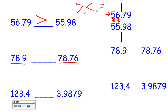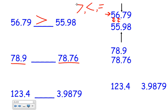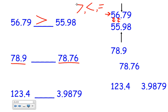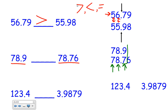On our next example we have seventy-eight and nine-tenths versus seventy-eight and seventy-six hundredths. This is a little bit more challenging because now one of the numbers actually has more digits in it. But does that really mean that it's greater or less? If I line up the decimals again, I notice the tens is the same, the ones is the same, and here we come to an issue — which one do you think is the greater number?